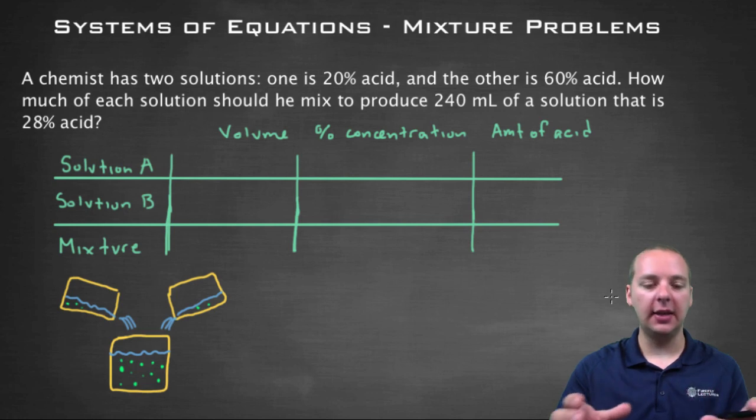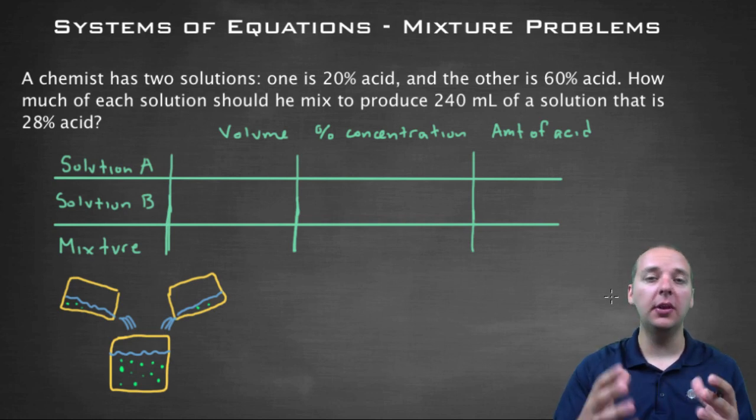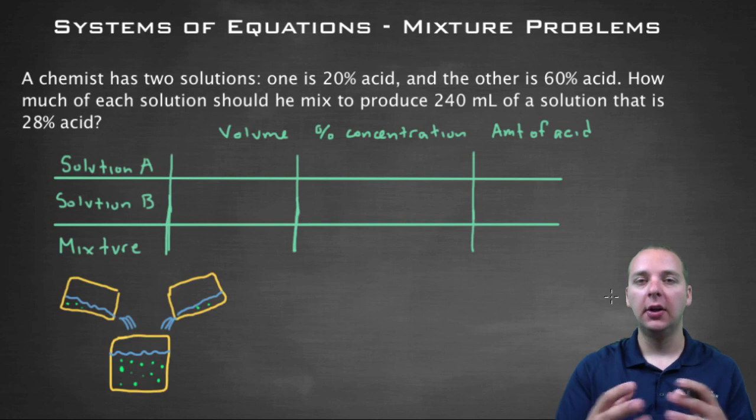What you'll have is somebody who's taking two quantities and they're going to mix them together to create a new substance. Often this is a chemistry type problem where they're mixing sulfuric acid or something like that, but really it could be any type of mixture. You'll see this phrased in slightly different ways, but for this example, here's what we have.